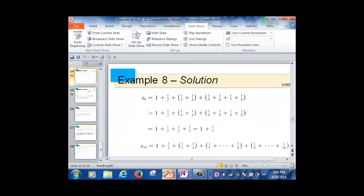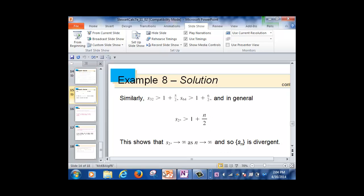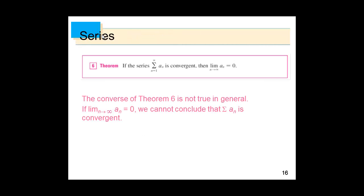Last time we finished up to slide 16. The last result we discussed: if the series sum of a_n from n=1 to infinity is convergent, then the limit as n goes to infinity of a_n is 0. So if a series is convergent, then the nth term of the series approaches 0 as n goes to infinity.